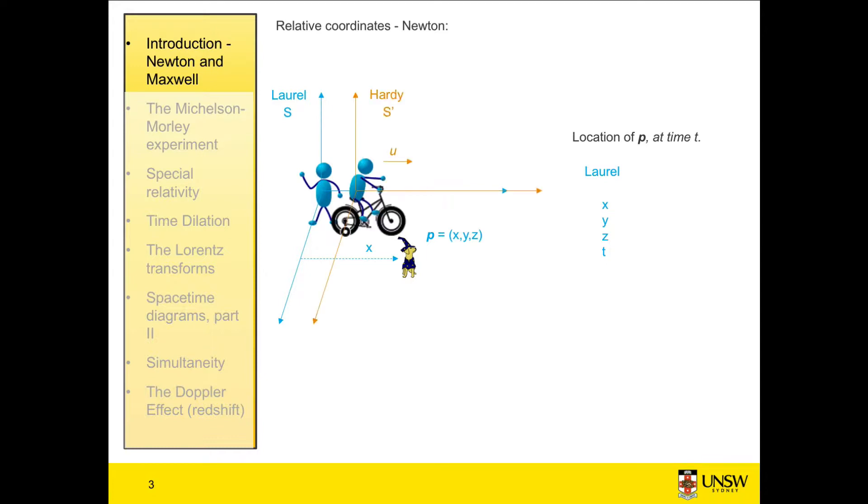And now we've got a second man, Hardy, riding past on his bike. So he's going in the positive x direction at some velocity u. Hardy, like Laurel, also has his own coordinate system centered on him. And this coordinate system we'll call x dash, y dash, and z dash, and the time will be T dash. So his horizontal distance to the dog is x dash.